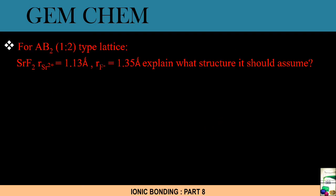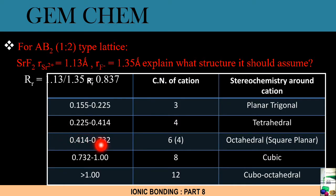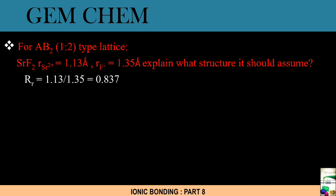Next we will deal with another example where it is given that it is an AB2 lattice, 1:2 type lattice. SrF2 is given. Radius of cation is given, radius of anion is given. So we have to explain what should be the structure. Remember how to take out the radius ratio? It is radius of cation by radius of anion. So this is our radius ratio which is obtained, right? And this 0.837 lies between which amount? That is 0.732 to 1. So what is the coordination number of cation? It must be 8, right? So it is having a cubic structure, but we will not consider it from here. We will consider it from the problem.